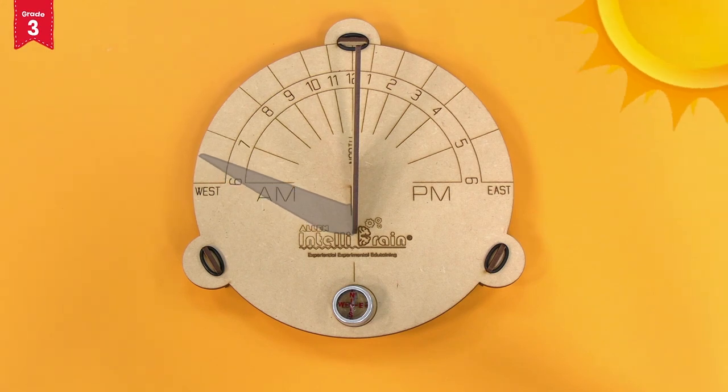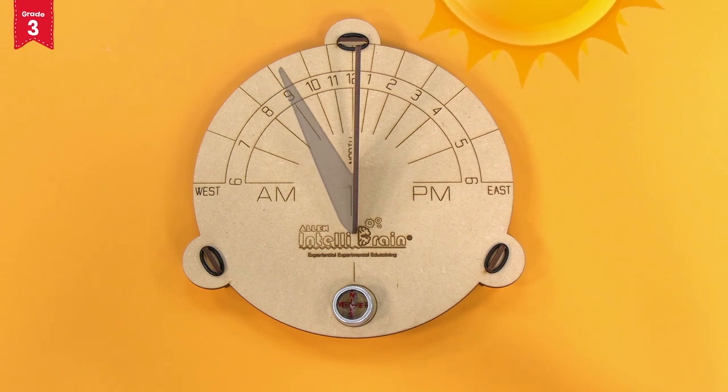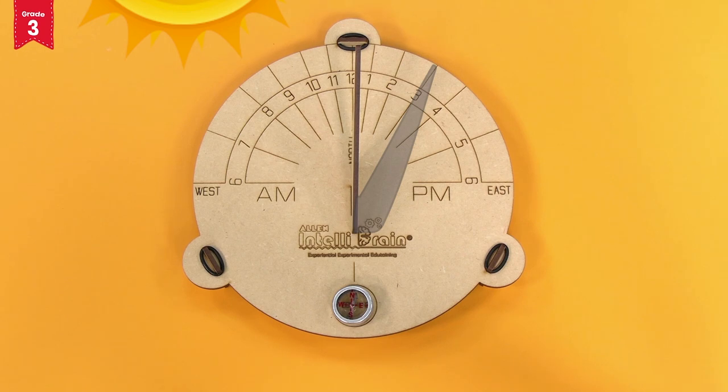The shadow maker will create a shadow on the sundial base and you can know the time of the day with the marked numbers. For example, if the shadow maker is making a shadow on the 3 mark in the afternoon, then it will be approximately 3 PM of the day.